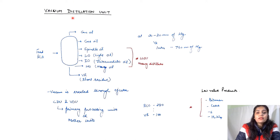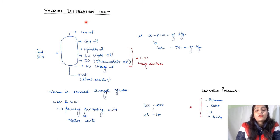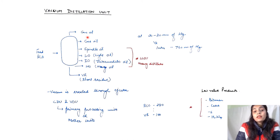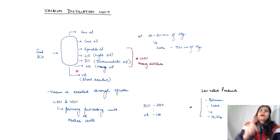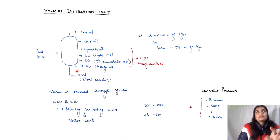Now, what is the principle behind the vacuum distillation unit? Why not carry out the whole process in the crude distillation unit only? The reason is that if in the crude distillation unit we heat any substance beyond 350 degrees Celsius, the crude starts to break down into coke. When the crude breaks down, further processing is stopped and useful products like gas and spindle oil cannot be formed.